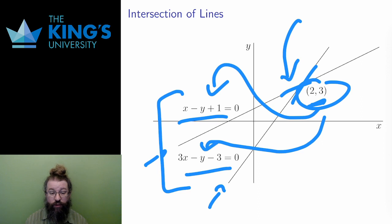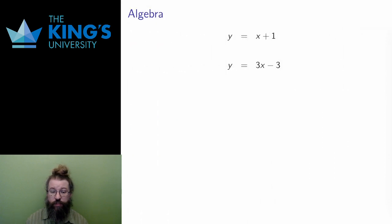You can check this if you want. Put x equals 2 and y equals 3 in the first equation, and the left will evaluate to 0. Put x equals 2 and y equals 3 in the second equation, and again the left will evaluate to 0. This is the key idea. The intersection point satisfies both equations. Therefore, to find the intersection point, I need to solve both equations. This is called solving a system of equations.